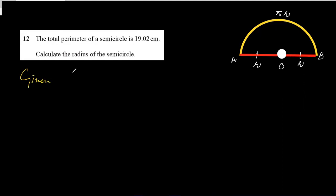The perimeter of semicircle is 19.02 centimeter.